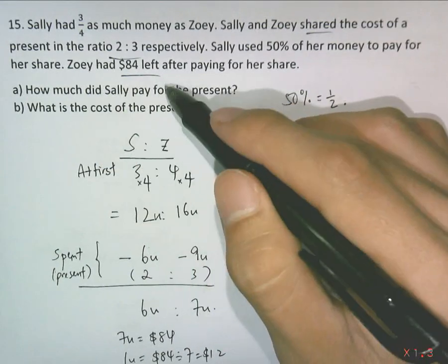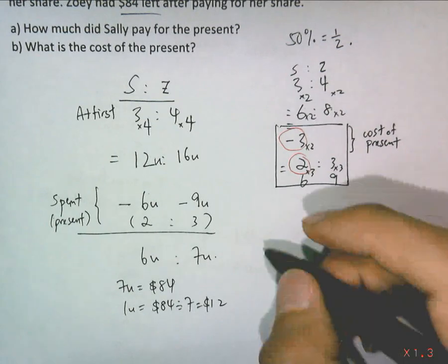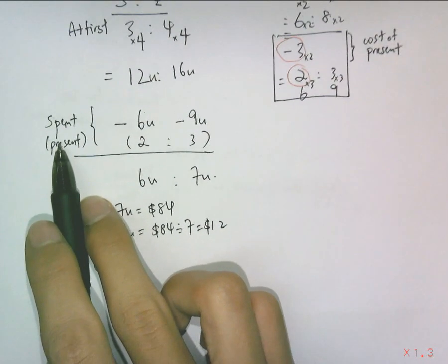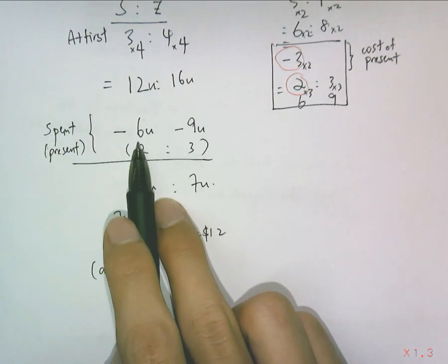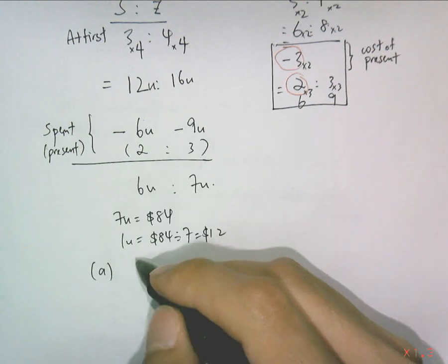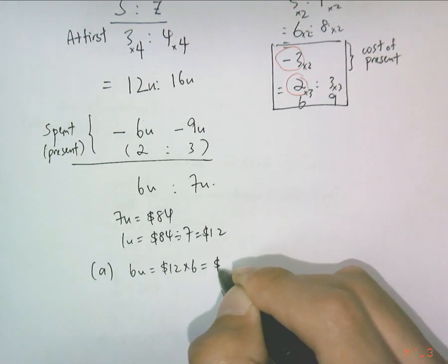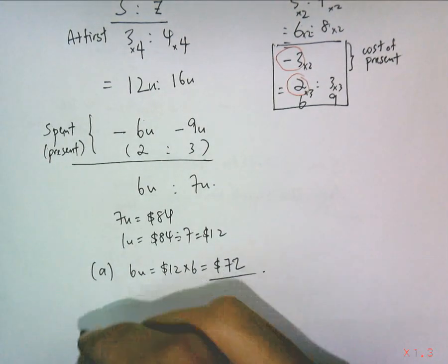Part a, how much did Sally pay for the present? The total number, you can see the present over here. Sally paid 6 units, not this 2, this 6 units. So I just use 6 units as $12 times 6. Sally paid $72 for the present.